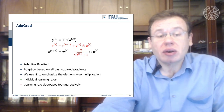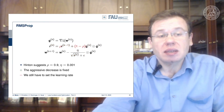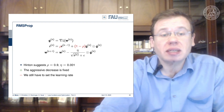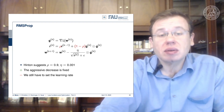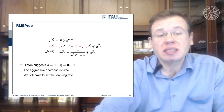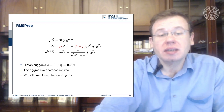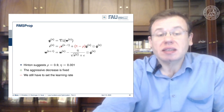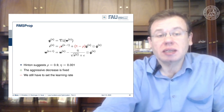One problem with AdaGrad is that the learning rate can decrease too aggressively. This leads to improved versions, and the improved version here is RMSProp. RMSProp introduces this rho to essentially introduce a delay, preventing very high increases. You can set rho to dampen the update of the variance of the learning rate. Hinton suggests rho=0.9 and ETA=0.001. This fixes the aggressive decrease, but we still have to set the learning rate.